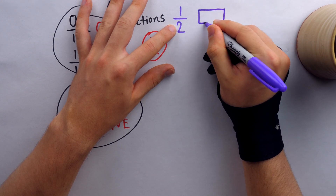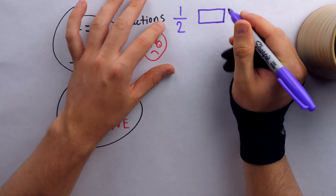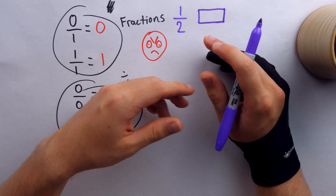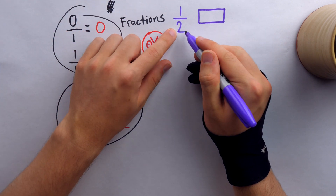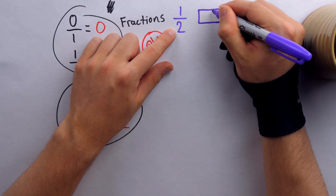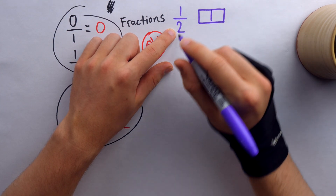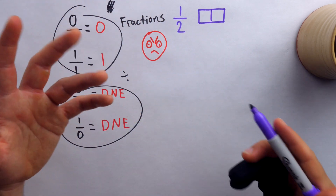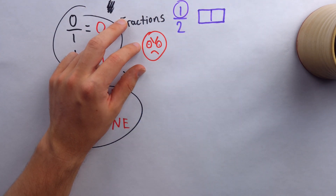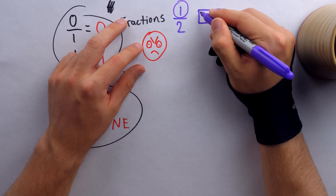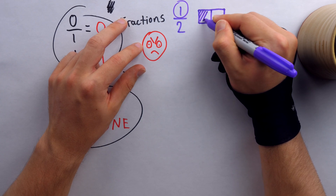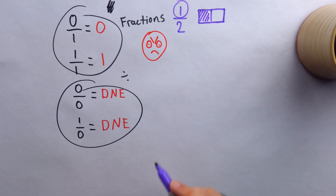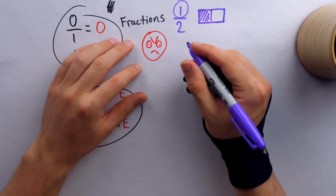Visually, we can represent that like this. Let's say this rectangle represents a whole — maybe it's a whole candy bar, maybe it's a whole dollar bill. The denominator tells me it's been split into two parts. So our whole has been cut into two parts. We don't have all of the parts — how many do we have? The numerator tells us: we have one part. So we can represent that by shading it in, and that's one half represented visually.